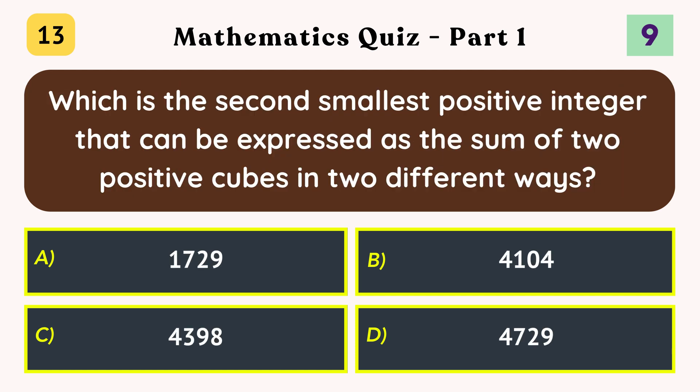Which is the second smallest positive integer that can be expressed as the sum of two positive cubes in two different ways? 4104.